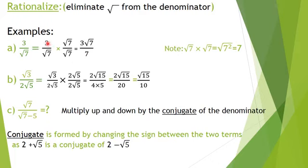On top, 3 times radical 7 is just 3 radical 7 — no problem having a radical in the numerator. So this value equals the original, but now it is rationalized with no radical in the denominator.